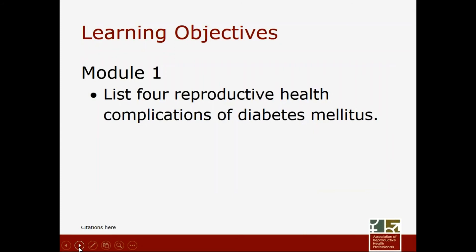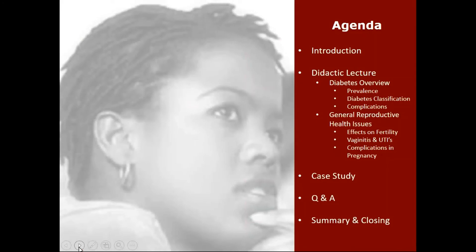Our main learning objective for this time together is to recognize four reproductive health complications of diabetes mellitus. We're going to start with an introduction and go through an overview of the prevalence of diabetes, how diabetes gets classified, and what some common complications are. Then we'll talk about general reproductive health issues, effects on fertility, and the relationship of diabetes to both vaginitis and urinary tract infections, and then look at how diabetes affects pregnancy and results in pregnancy complications. We'll spend some time with a case study and then open it up for questions and answers, which you can provide by using the keyboard on your computer.